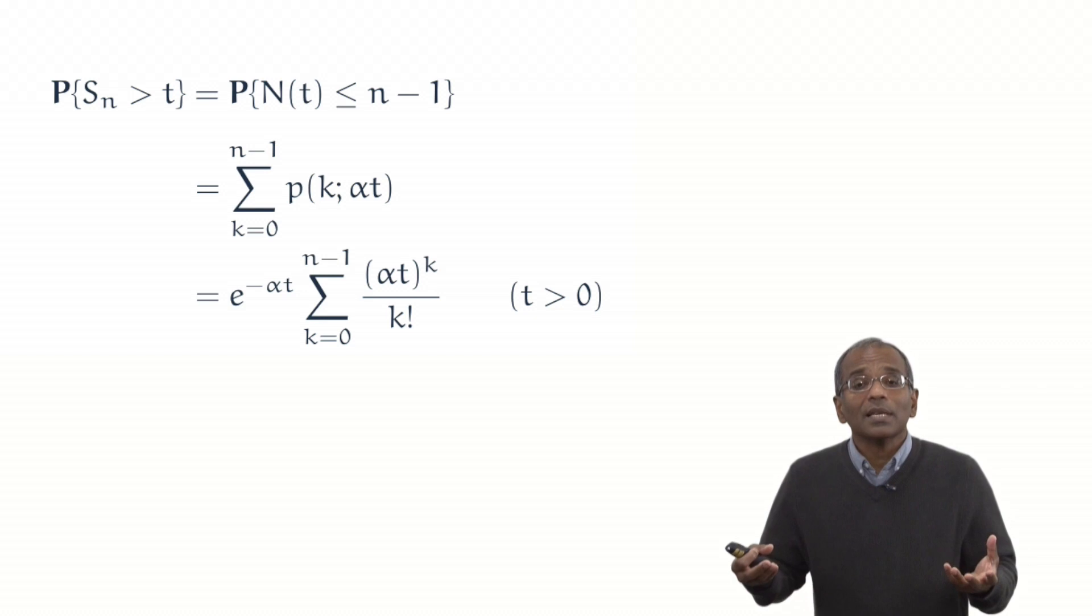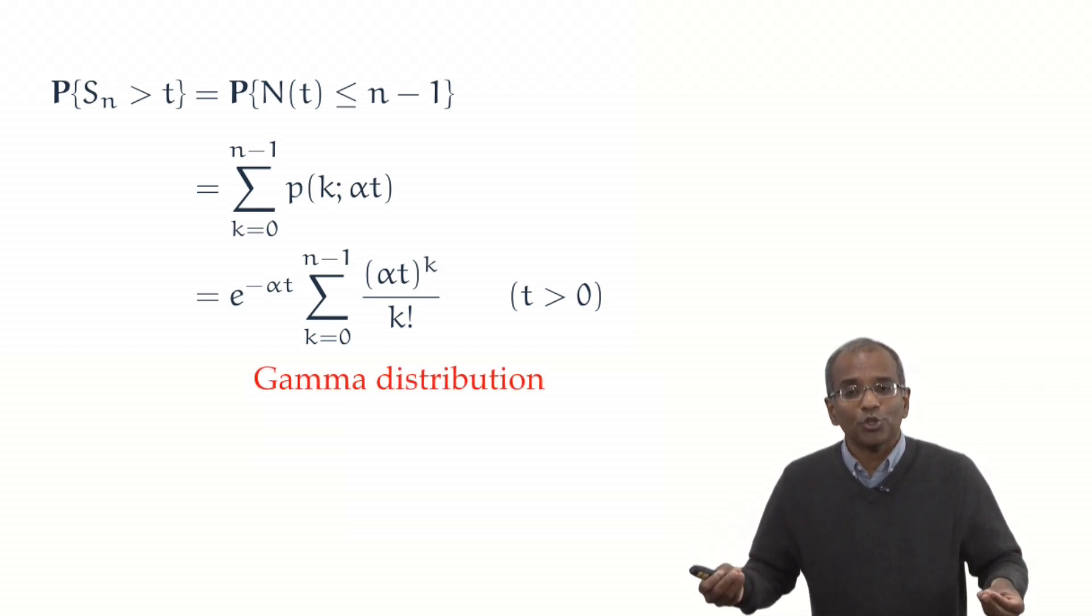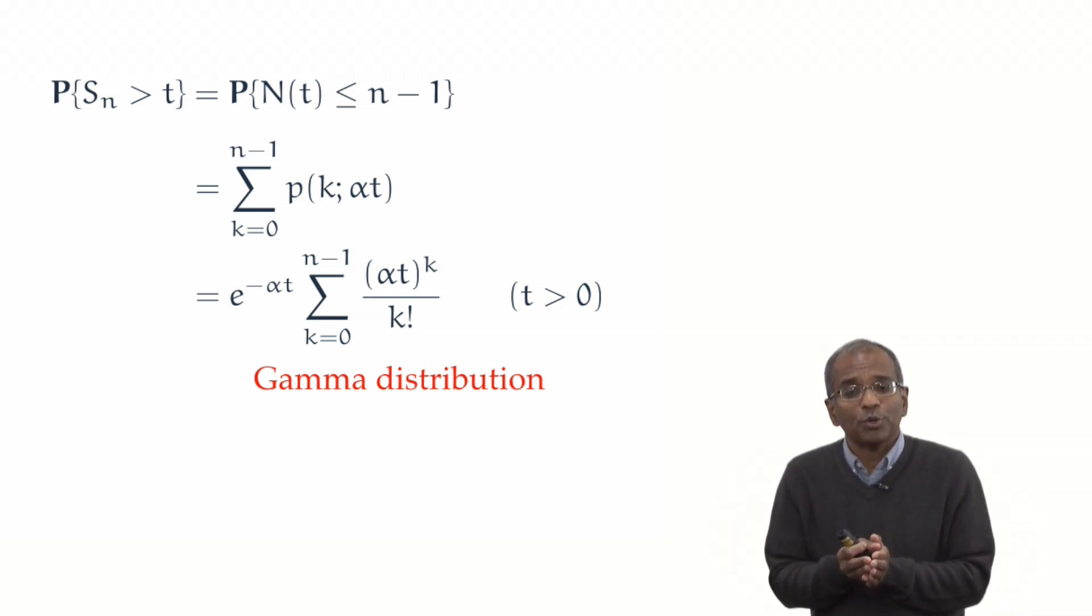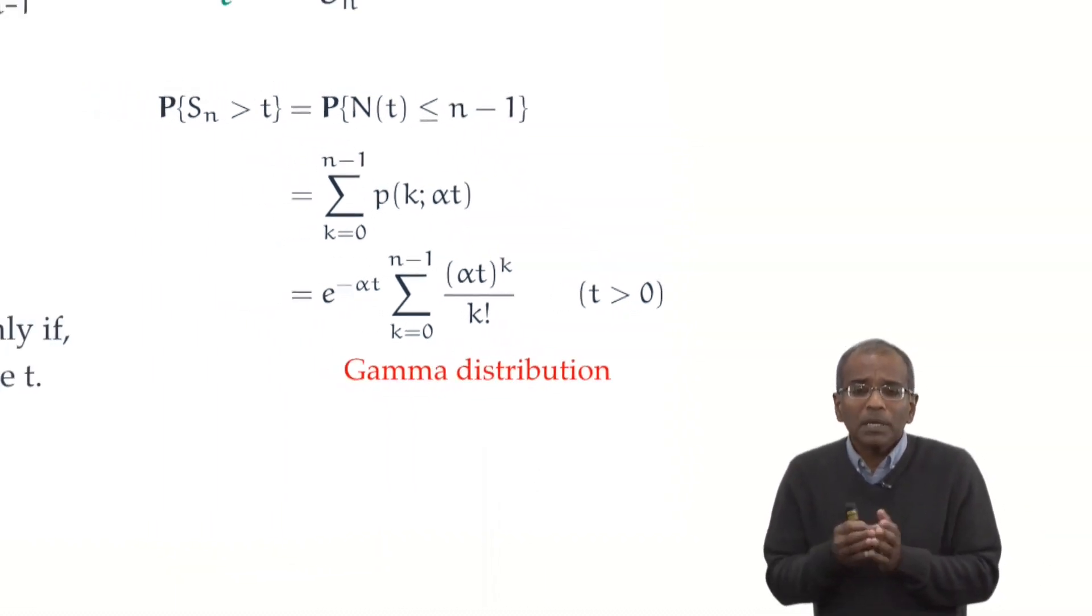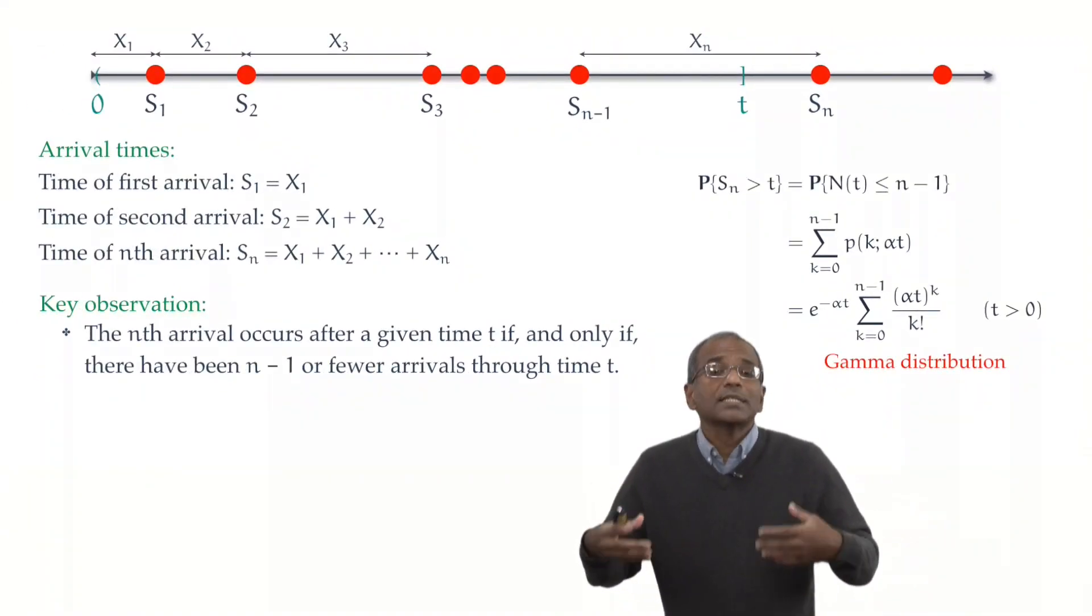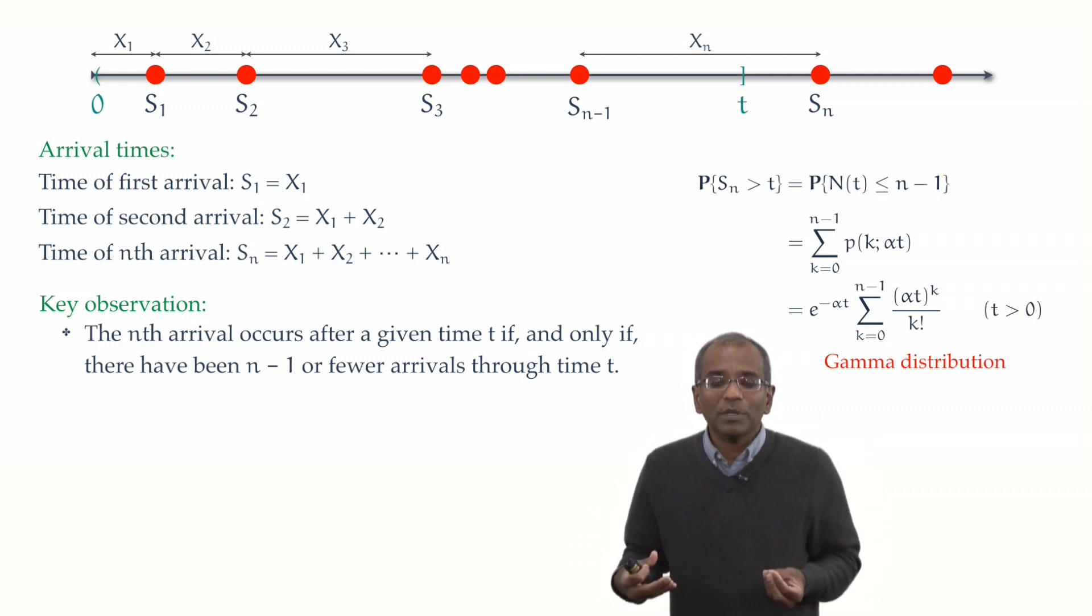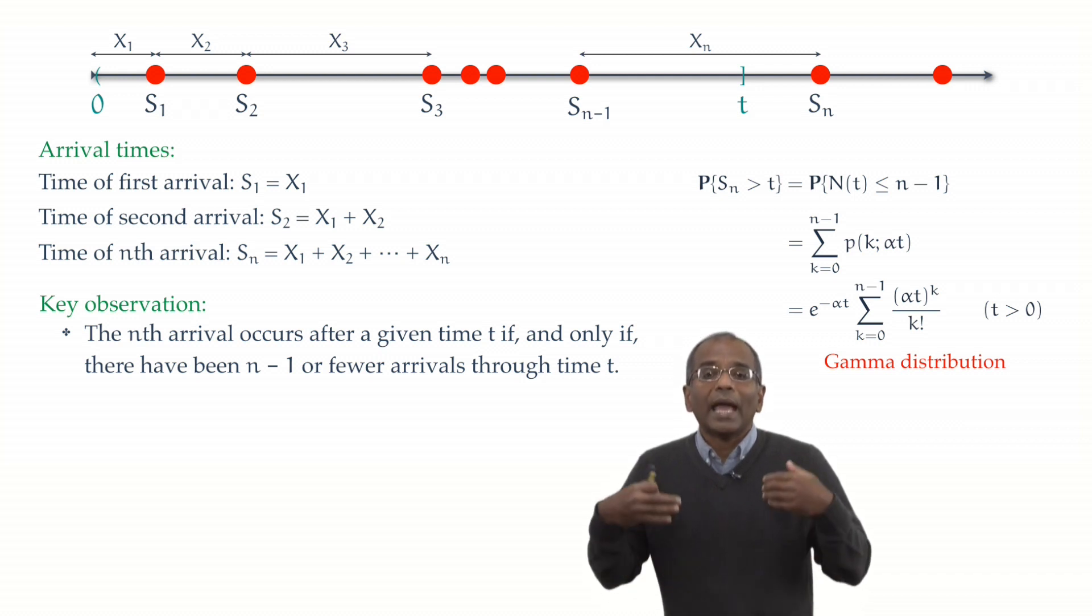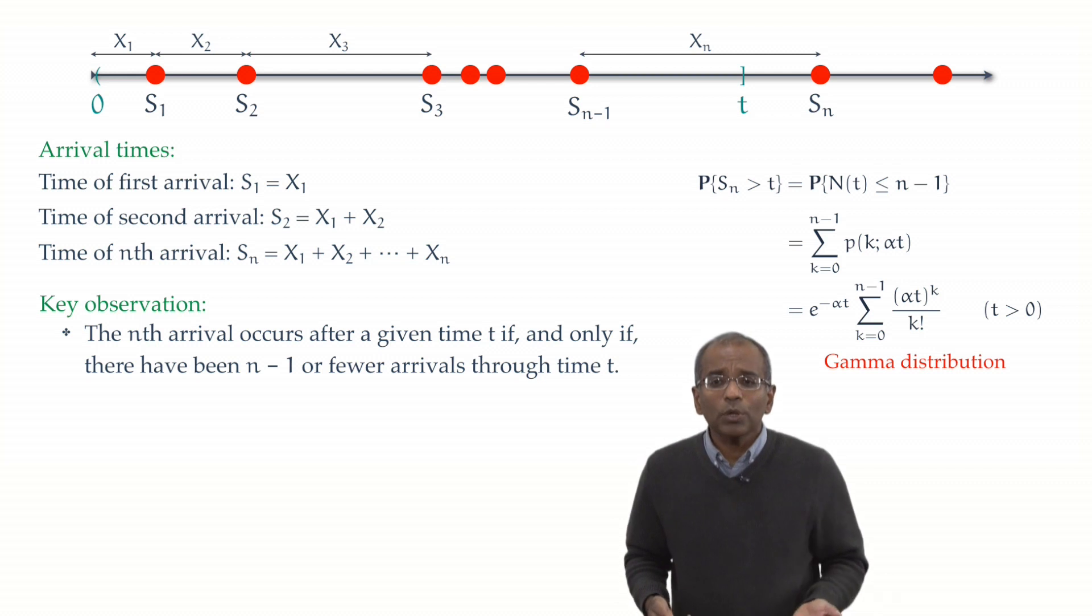This is called the gamma distribution. To be sure, it has a slightly more complex form than the exponential distribution we saw before. But nonetheless, it is simple enough in its own right, and it is, just as in the case of the exponential variable, a complete characterization of the probability measure associated with the nth waiting time.